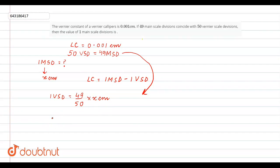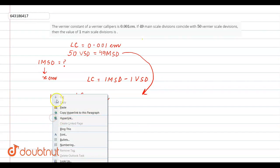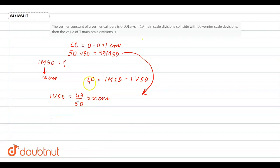Now we will put the value here. Least count 0.001 equals 1 main scale division (x) minus 1 vernier scale division, which equals 49 divided by 50 times x centimeters.